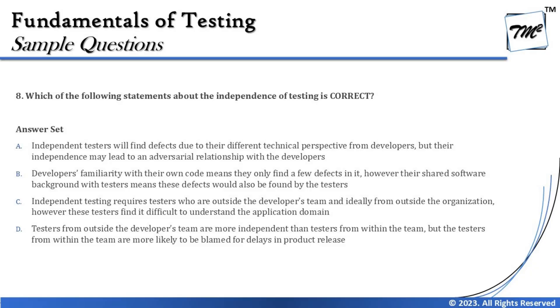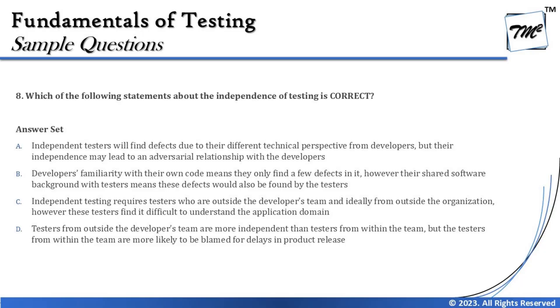The next question is question number 8: which of the following statements about the independence of testing is correct? Independence of testing means having independent testers and understanding the benefits and drawbacks. Option A says: independent testers will find defects due to their different technical perspective from developers, but their independence may lead to an adversarial relationship with developers. This is a good combination of a benefit and a drawback of having independent testers.